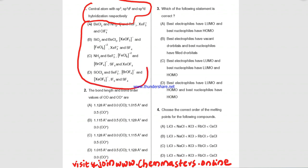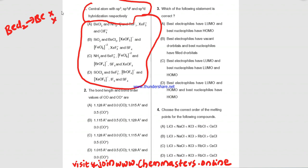Look at the four given options with different combinations of species. Take the first one: beryllium chloride, in which beryllium is the central atom. It contains two valence electrons and makes two sigma bonds with two chlorines, which produces sp hybridization.